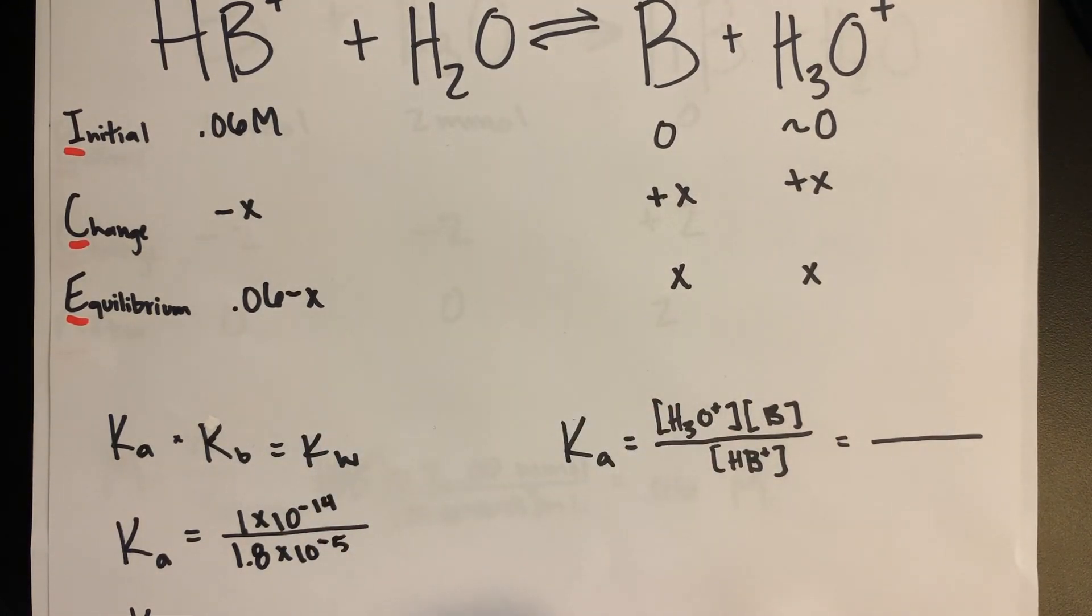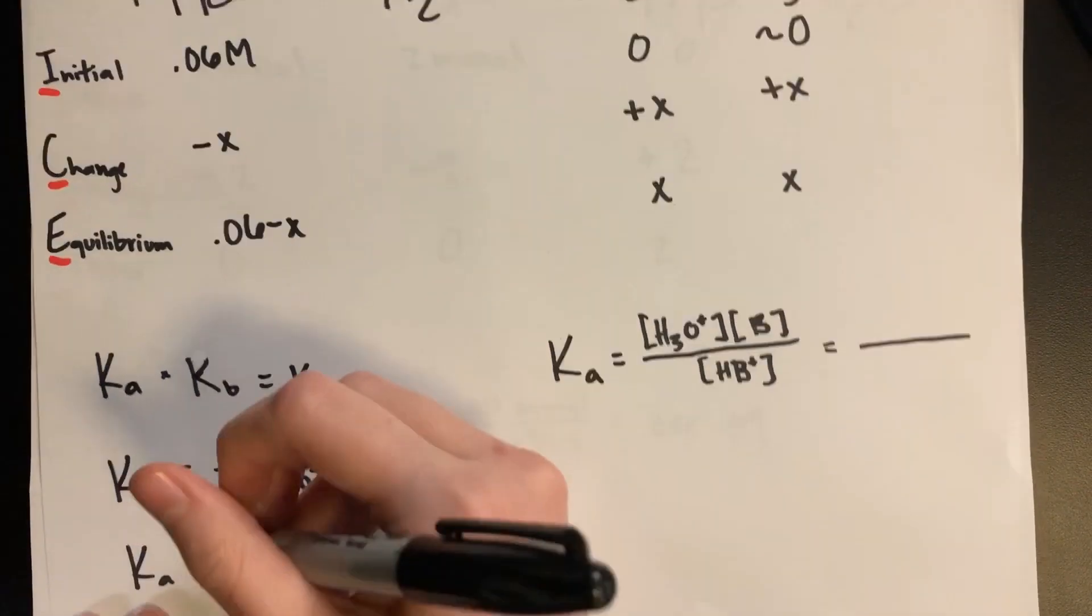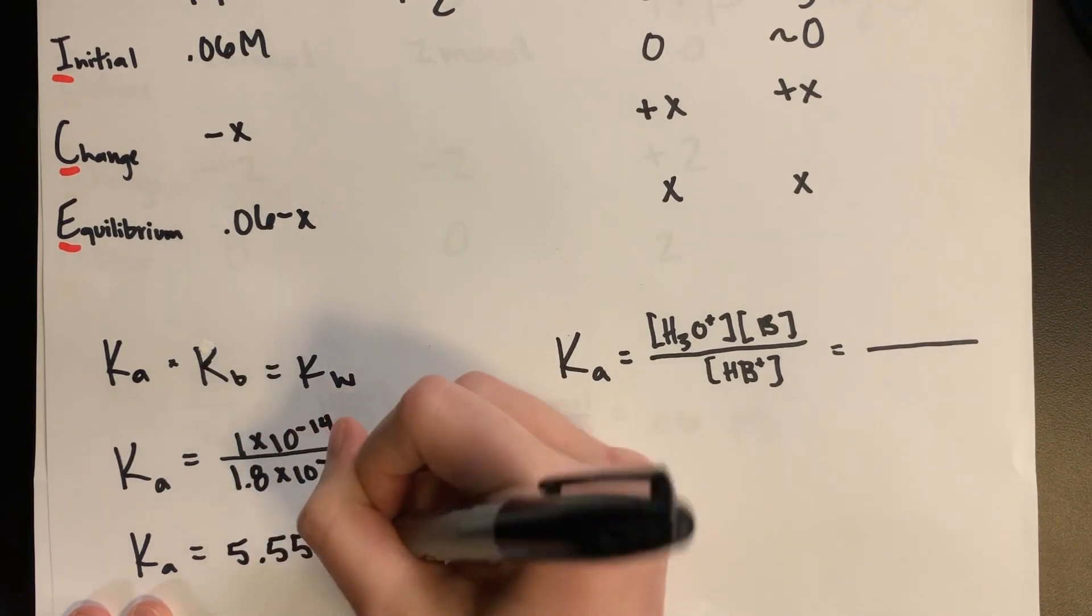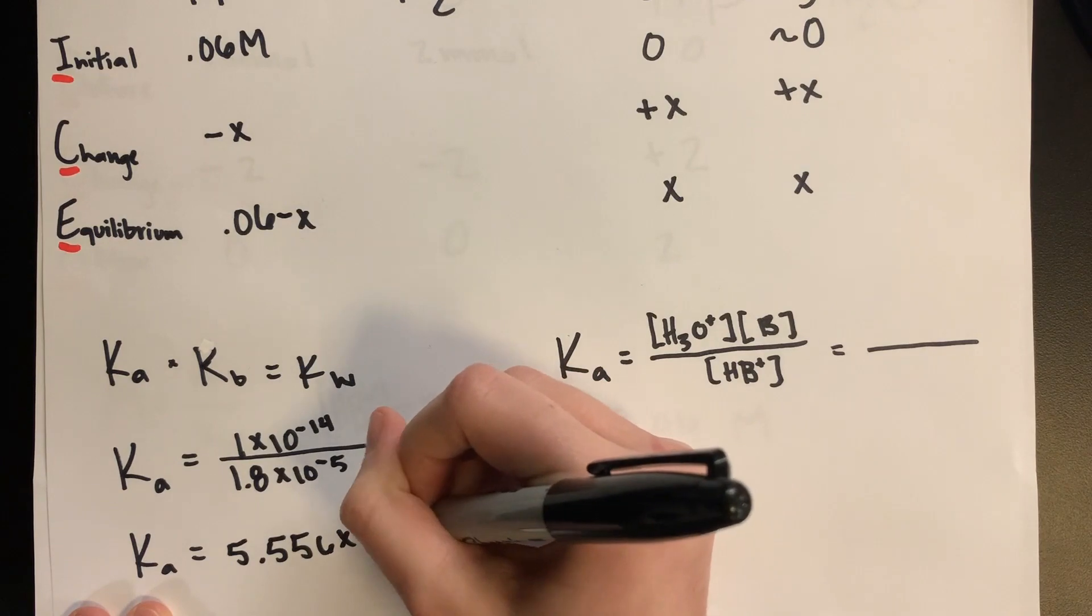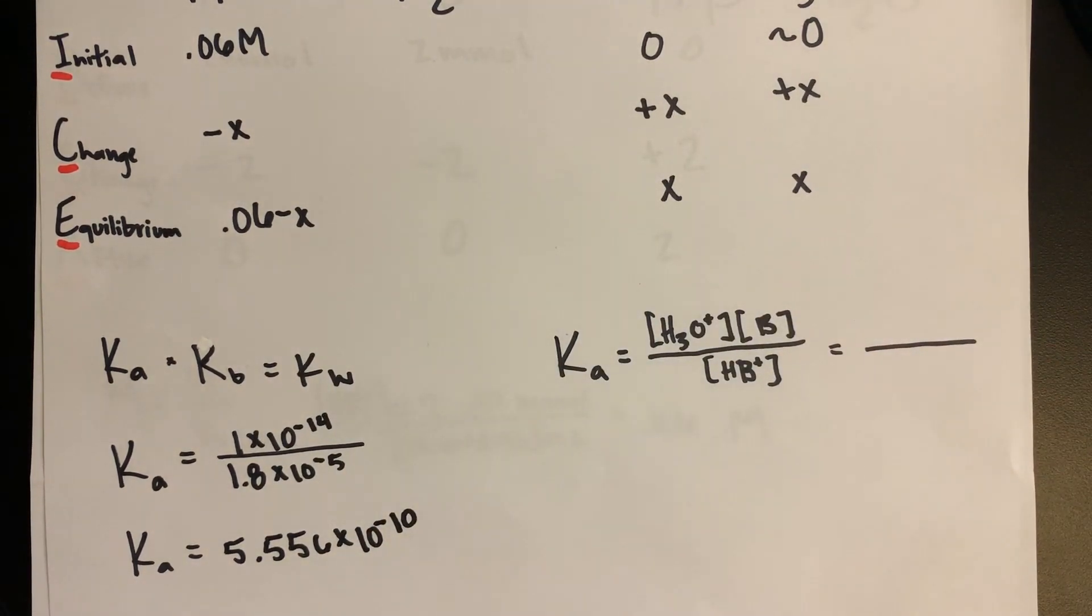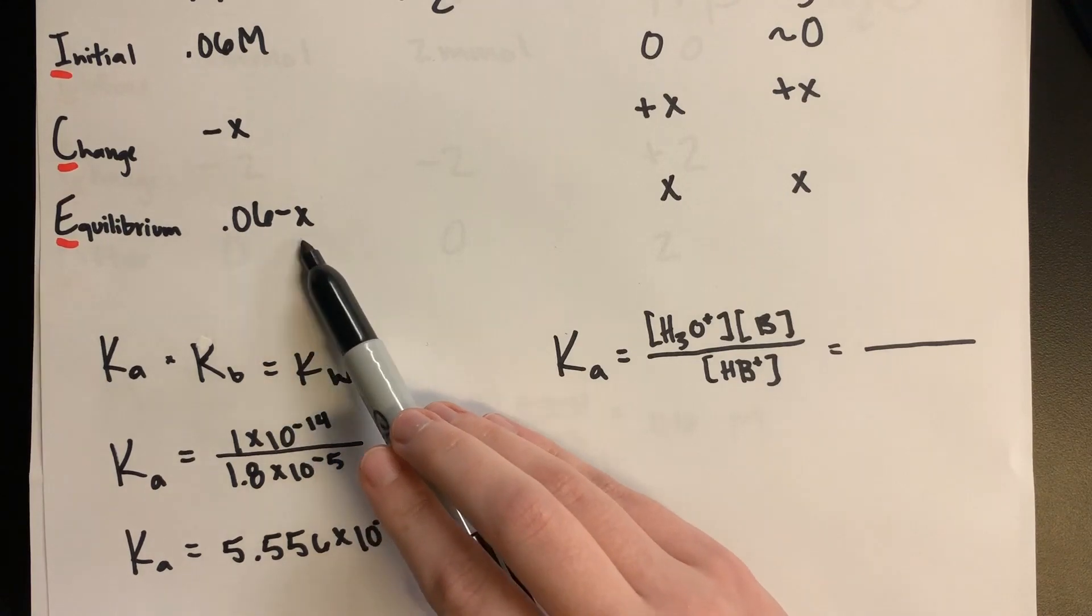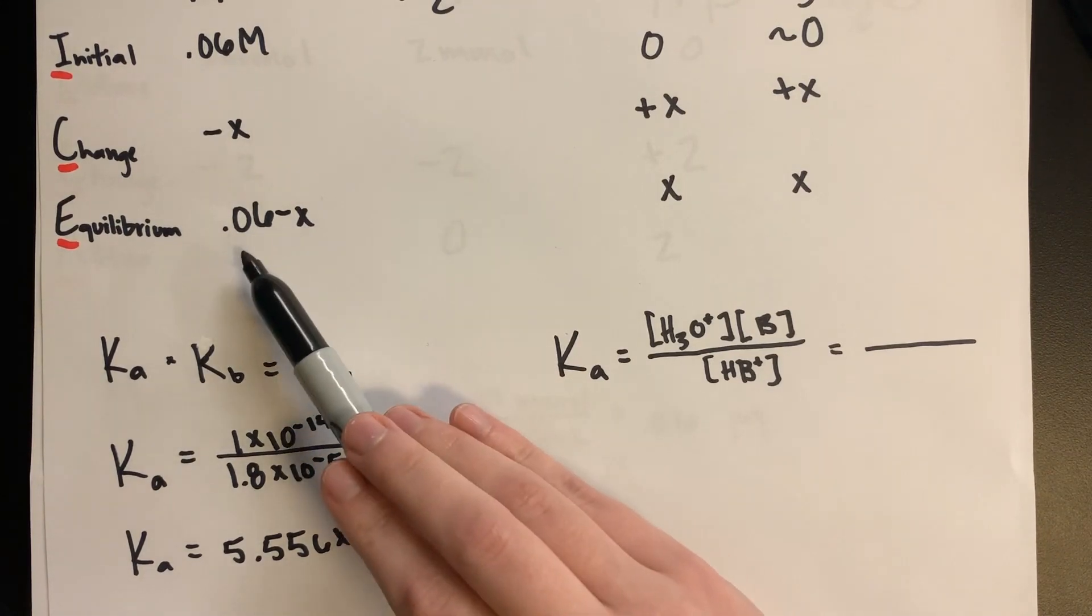Ka would then be calculated out to be 5.556 times 10 to the negative 10. And because Ka is such a small number, we can approximate that 0.06 minus X is going to be roughly 0.06.